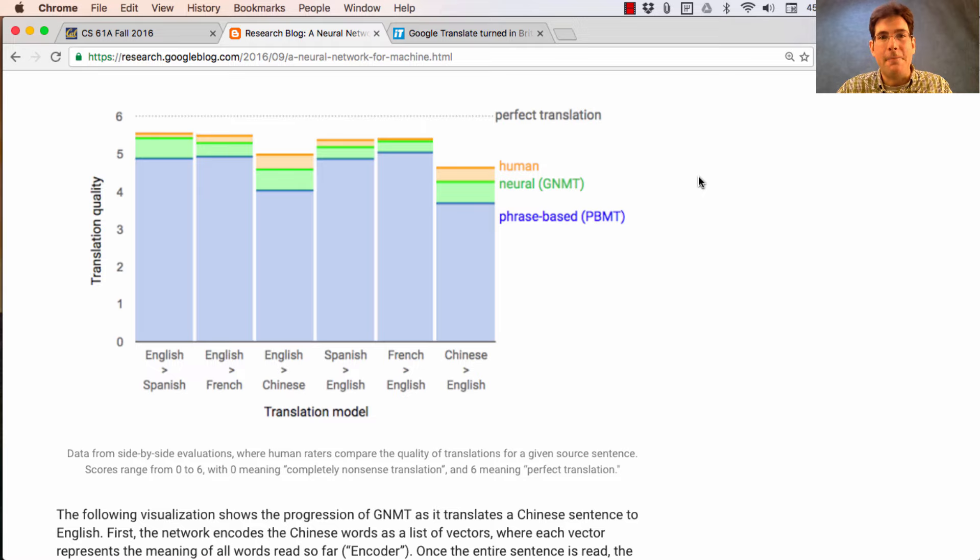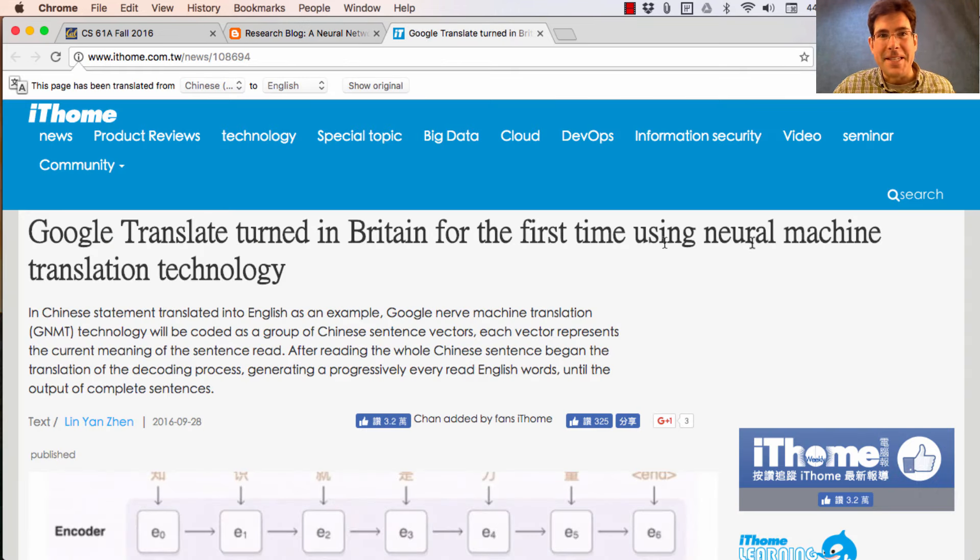So if you look at what happens when you actually use this system, which they've released in production for Chinese to English, you can see that it's still not perfect. So here's an article written about what just happened in the world. The headline is Google Translate turned in Britain for the first time using neural machine translation technology. I'm not sure what Britain is doing there.